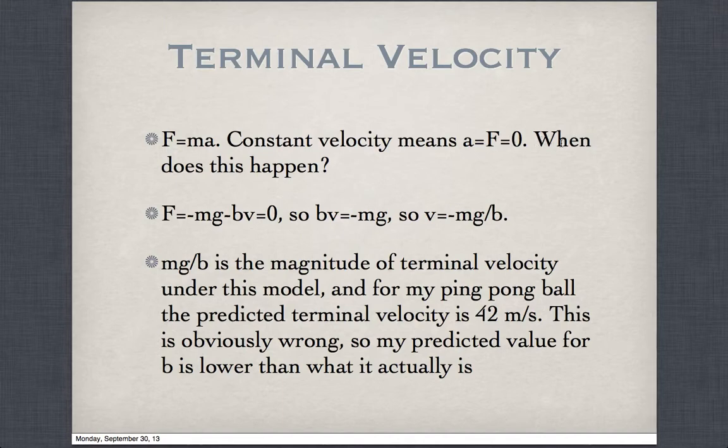Under a drag force, when does this happen? We set F, which is minus mg minus bv, to zero. Do some algebra and find that you reach terminal velocity when v equals mg over b. That is our terminal velocity.